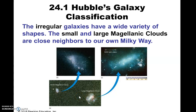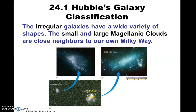They're pretty spectacular — these large, cloudy-looking objects in the southern hemisphere. Remember, one thing we already studied is supernova 1987A, which of course occurred in the Large Cloud of Magellan.